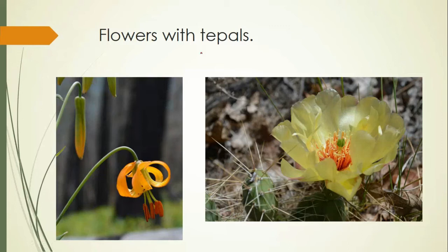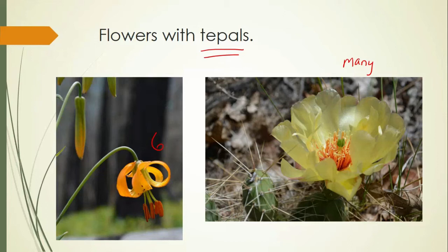Of course, there are always exceptions, and so we have this term we've invented: tepals. It's neither a sepal nor a petal. But if you look at this lily here, there are six tepals — they all look the same. Some are really sepals, some are really petals, but since they all look the same, we call them tepals. Even more so on this cactus flower here — really beautiful flower, but there's definitely more than five or six of these petals, so here we would just say there are many, and since we can't differentiate, we call them tepals.